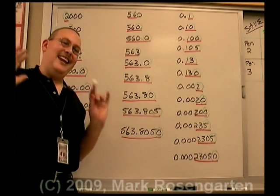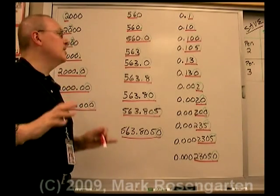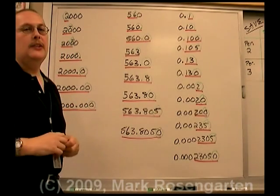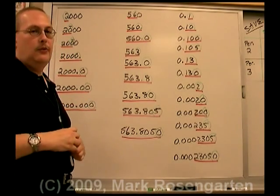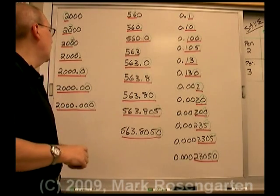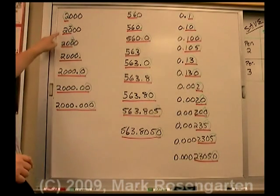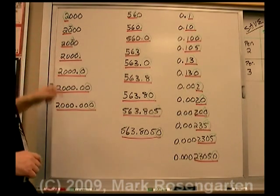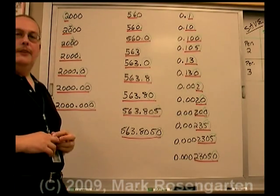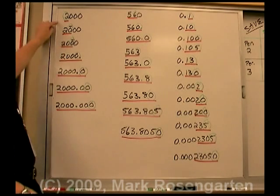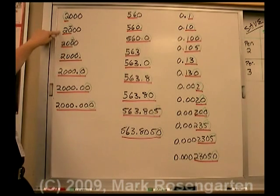This works in every possible instance when you're trying to find the number of significant figures in a measurement. The number of digits you underlined is the number of significant figures in the measurement.